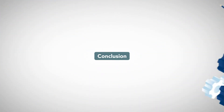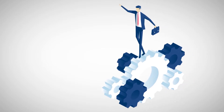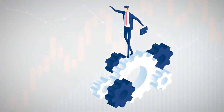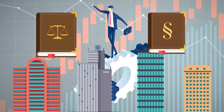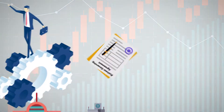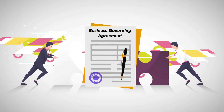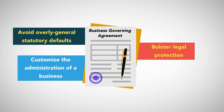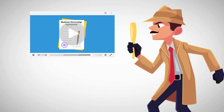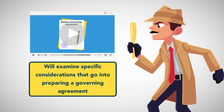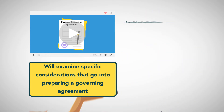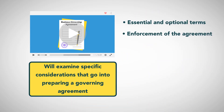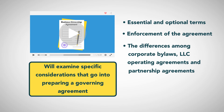Conclusion. There are many things about creating and running a business over which one has little or no control, like market conditions, competition, and government laws and regulation. Having a business governing agreement, preferably in writing, is one way to avoid overly general statutory defaults, bolster legal protection, and customize the administration of a business. Later modules in this course will examine specific considerations that go into preparing a governing agreement, including essential and optional terms, enforcement of the agreement, and the differences among corporate bylaws, LLC operating agreements, and partnership agreements.